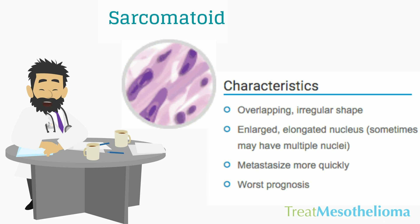The sarcomatoid cell characteristics are: overlapping irregular shape, enlarged elongated nucleus, sometimes may have multiple nuclei, and they metastasize more quickly.